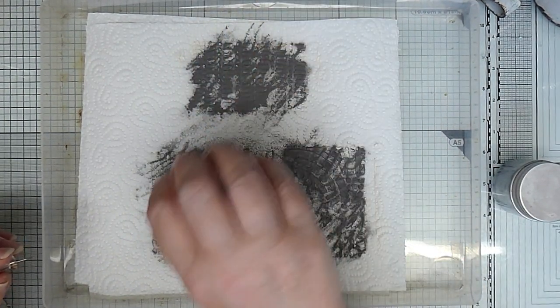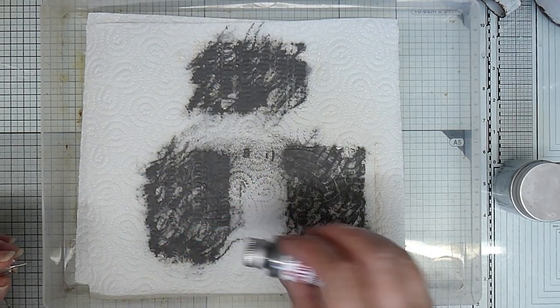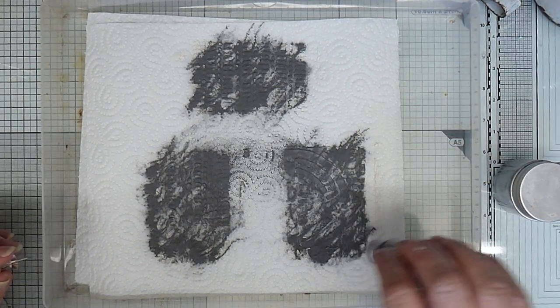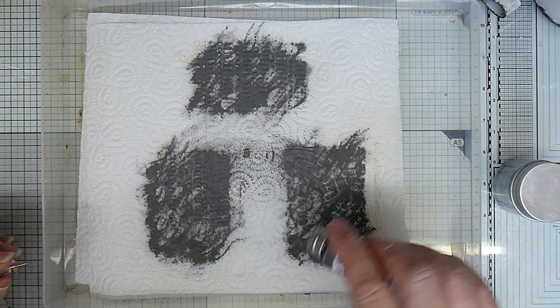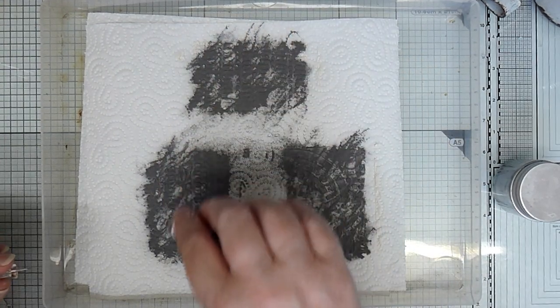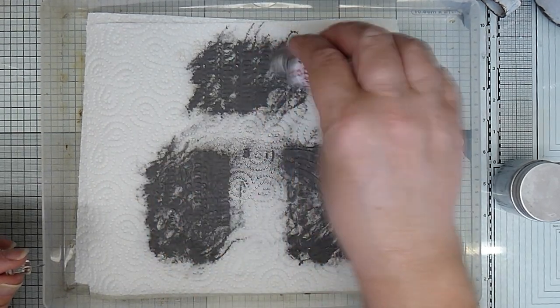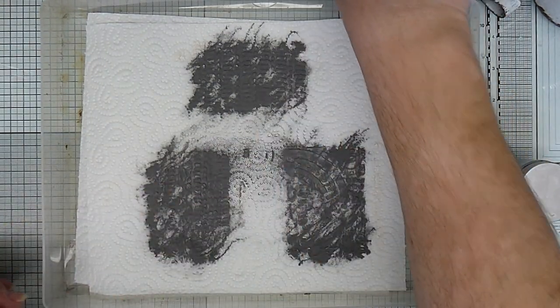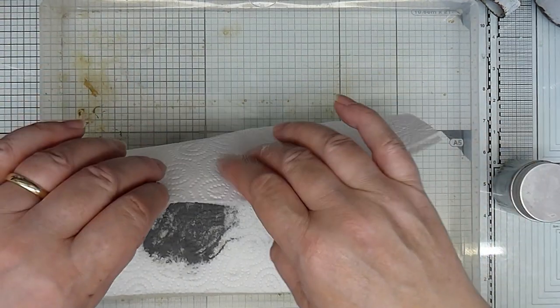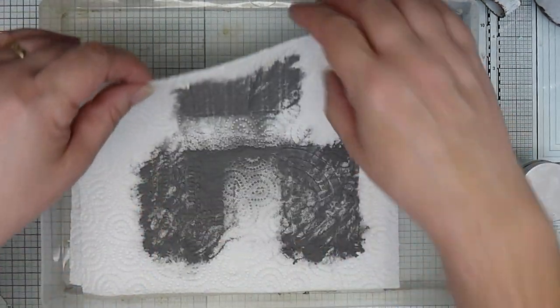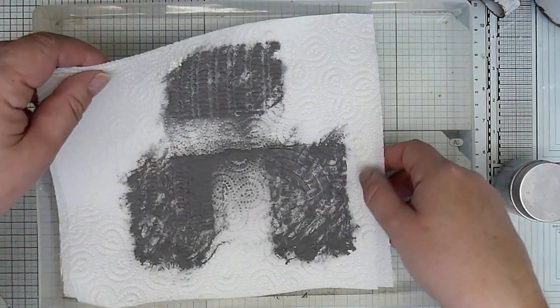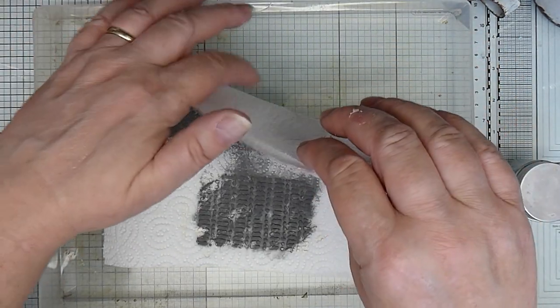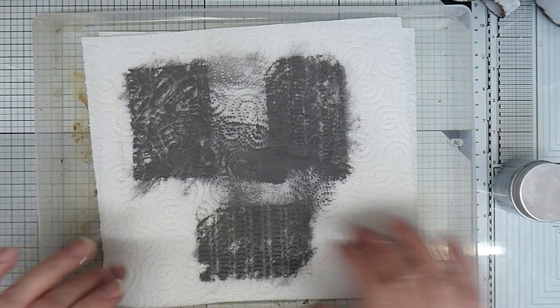You've got to work fairly quickly because this stuff dries quite quickly. And you want it onto the grunge paste while it's wet. If your grunge paste dries out, it's not going to work as well. It looks like I'm putting a lot on and you think, oh, what a waste. But I'm actually going to capture it. So I'll put the stopper on there.